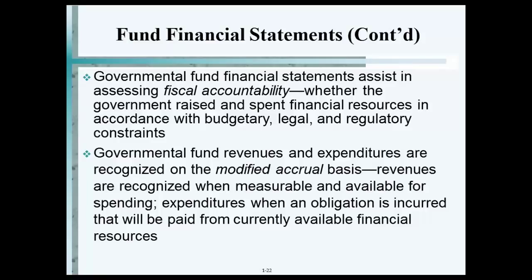Here's a little secret: when you see the word 'expense,' it should tell you that's accrual basis. If it says 'expenditure,' it's modified accrual basis. An expense can never be modified accrual basis because the definition of an expense is expiration of a cost — a period cost of some kind. So don't use these terms interchangeably. Expense is accrual basis; expenditure is modified accrual basis.